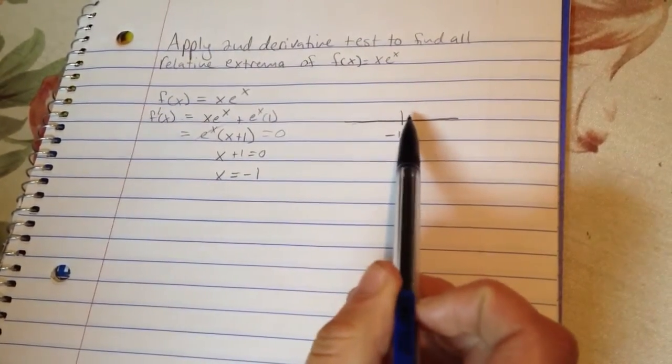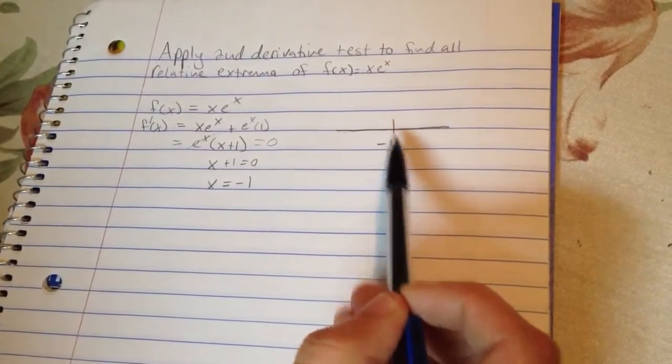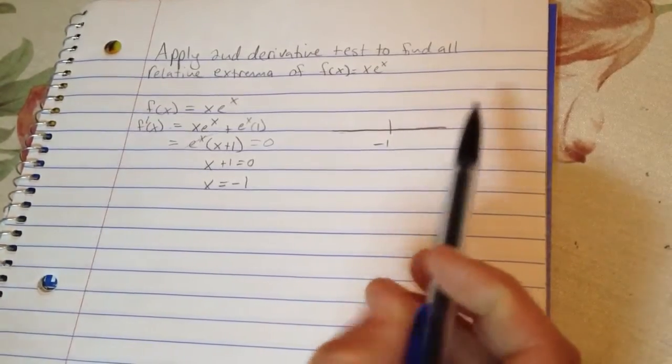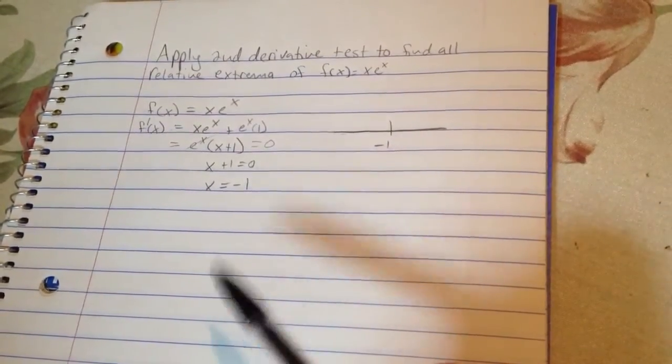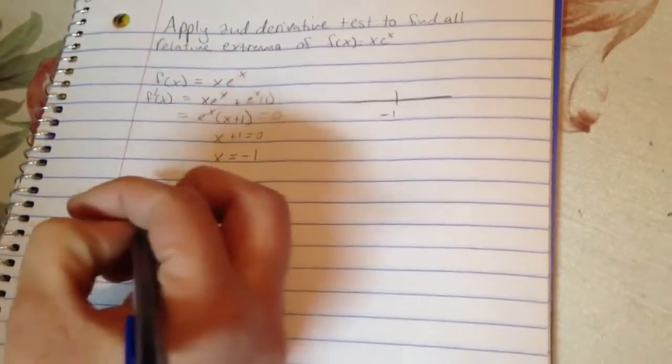So at this point, we know that this is our critical number. What we want to find out is whether or not there is going to be a relative min or a relative max, if in fact we have a relative min or max, and what the exact point is if we do have them. So in order to do that, we're going to use the second derivative.